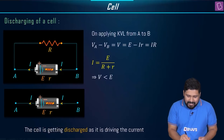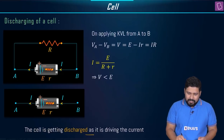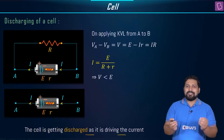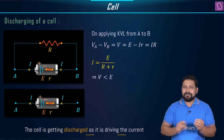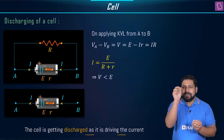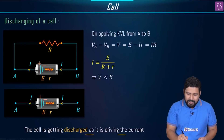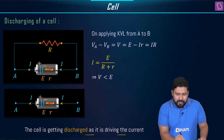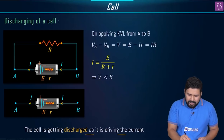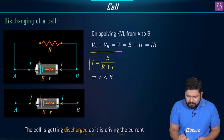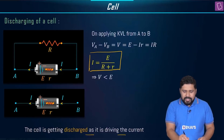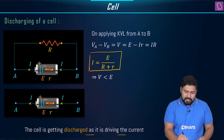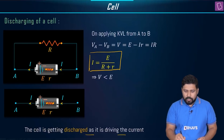If the cell is getting discharged, it is driving the current — it is making the current move across the circuit. From this, one very important expression is the current: I = E / (R + r).